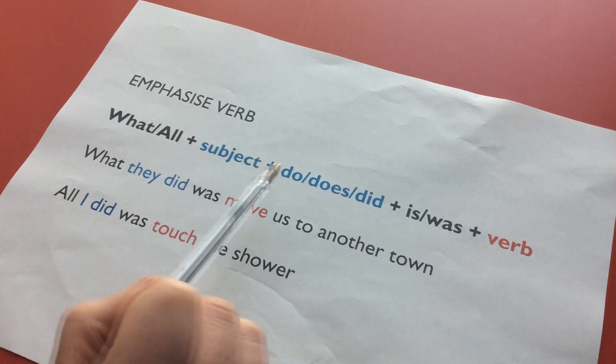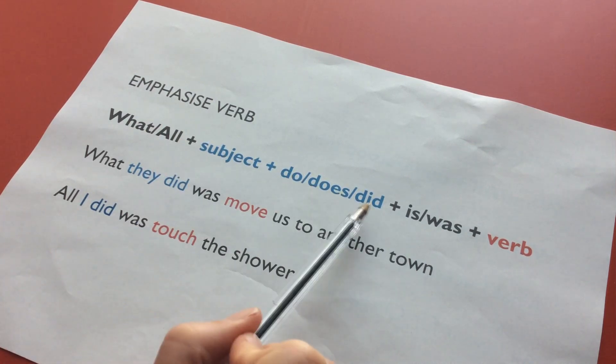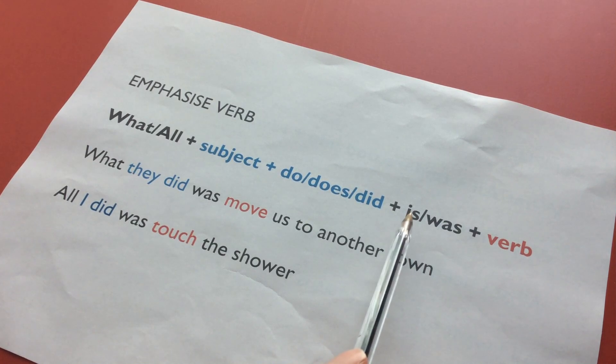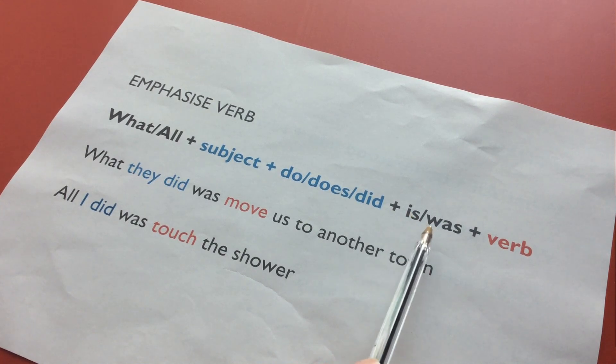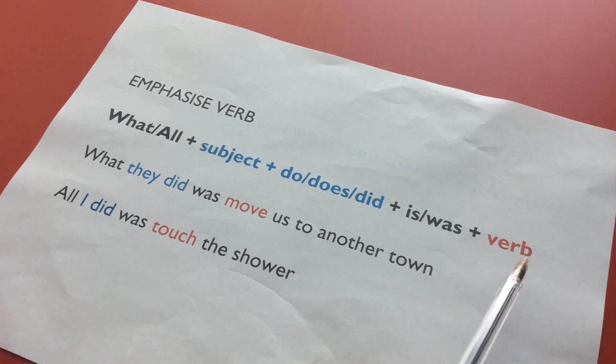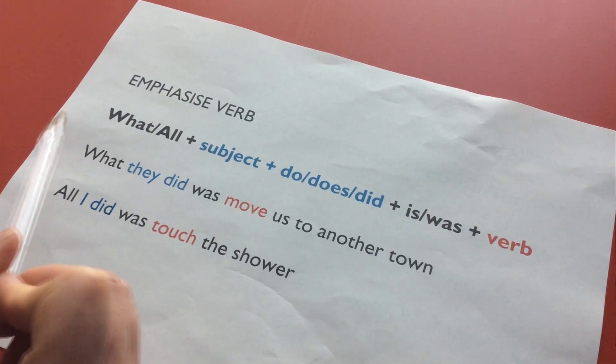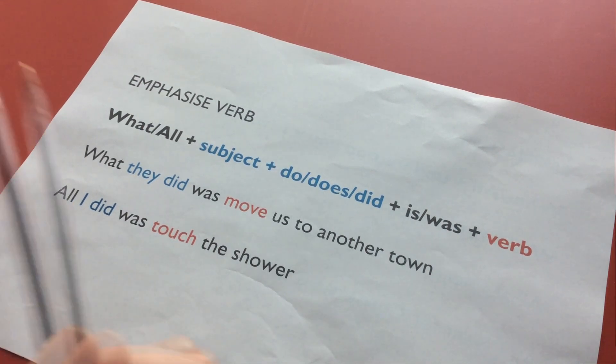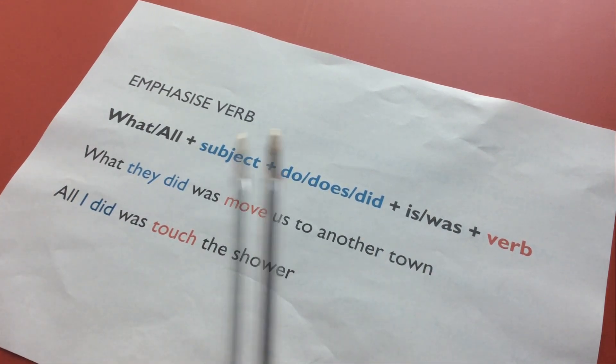To emphasise a verb, I used this structure: 'what' plus the subject, followed by 'do', 'does', or 'did', and then followed by 'is' or 'was', plus the verb we want to emphasise. So instead of saying 'they moved us to another town', I said 'what they did was move us to another town'. So that highlights the verb.